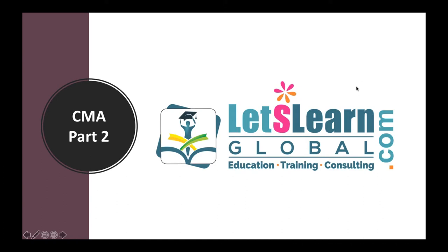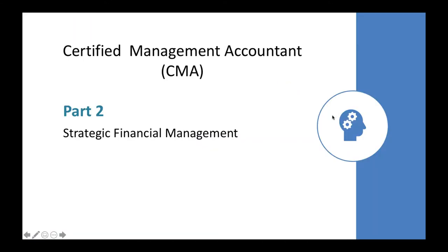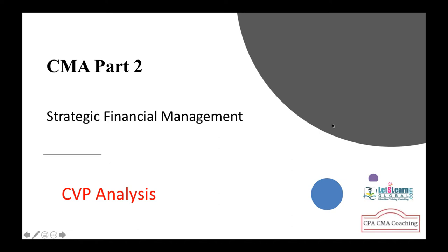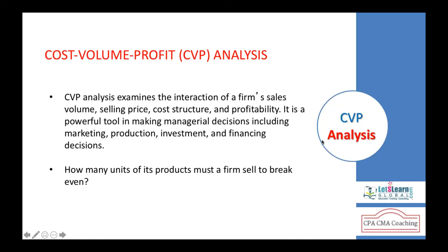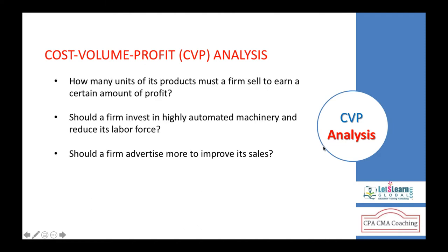Welcome to the session on CMA Part 2: Strategic Financial Management. In this session we'll discuss CVP analysis — cost-volume-profit analysis — which is used in decision making. It helps us to maximize our profits, take decisions on production regarding how many units are to be sold, what amount of investment is required, and what is to be borrowed or invested in changing the capacity levels.